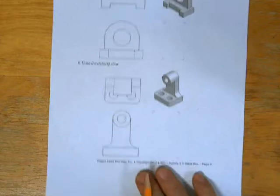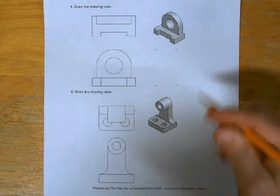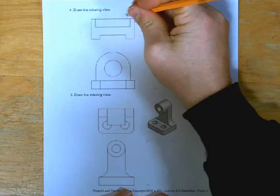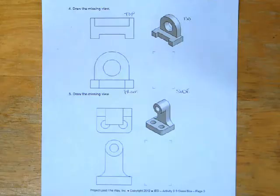All right, the last two that I'm going to do are on the back of the sheet, and we're going to start with number four. So I'm going to start by labeling this as the ISO, the top, the front, and then we are going to complete the side view this time.